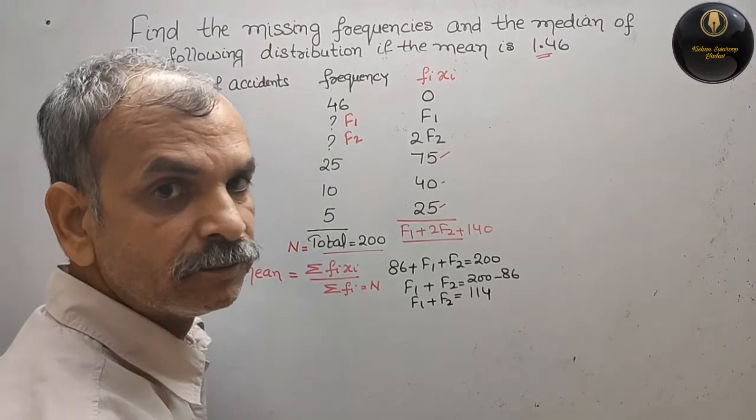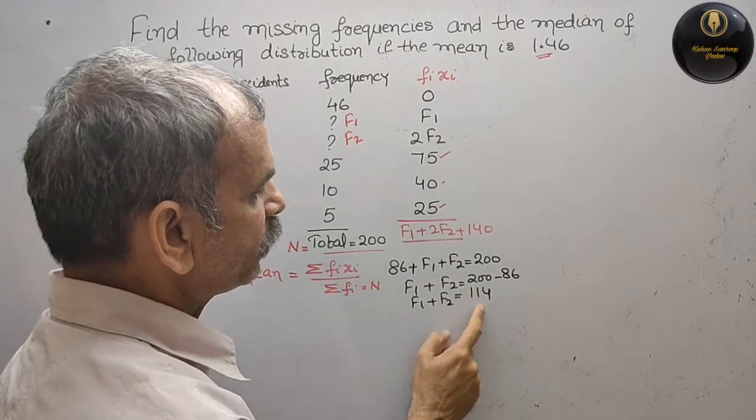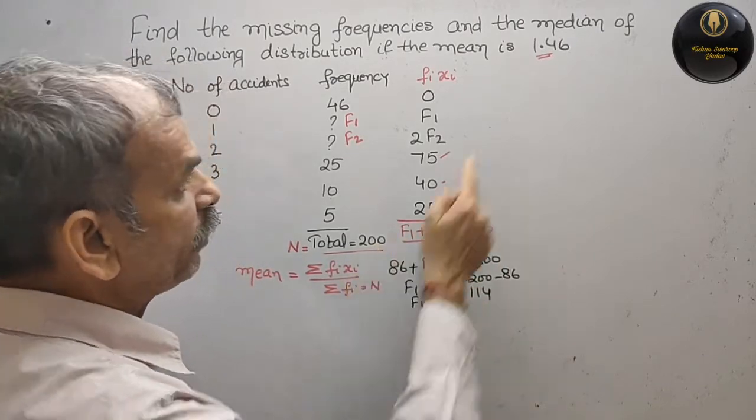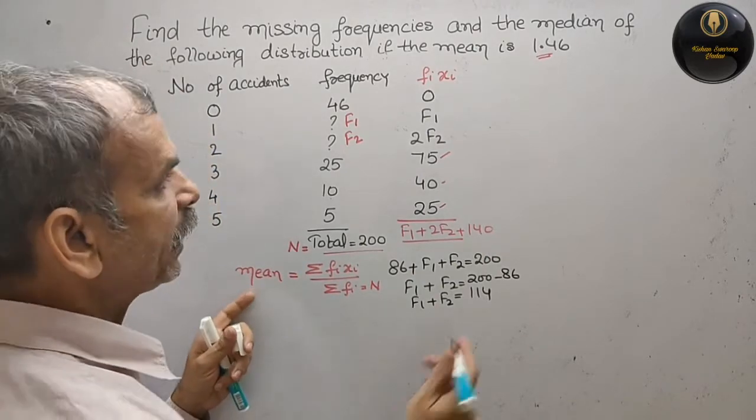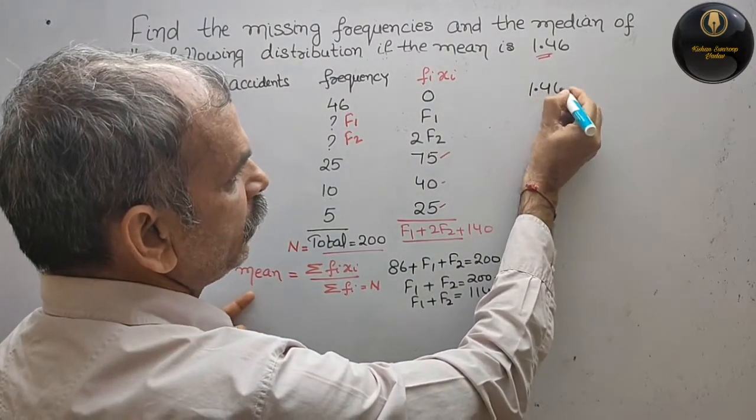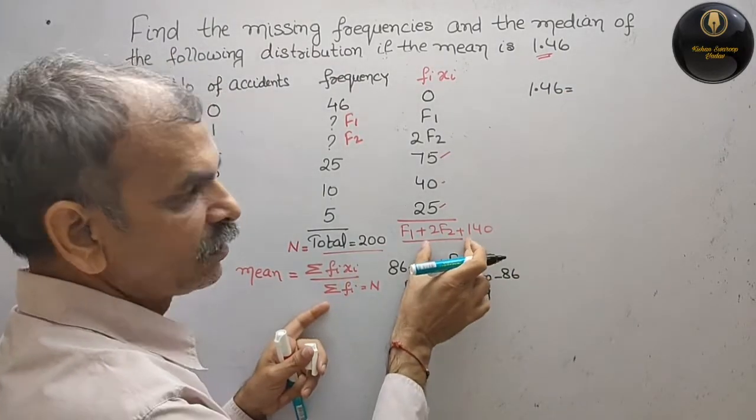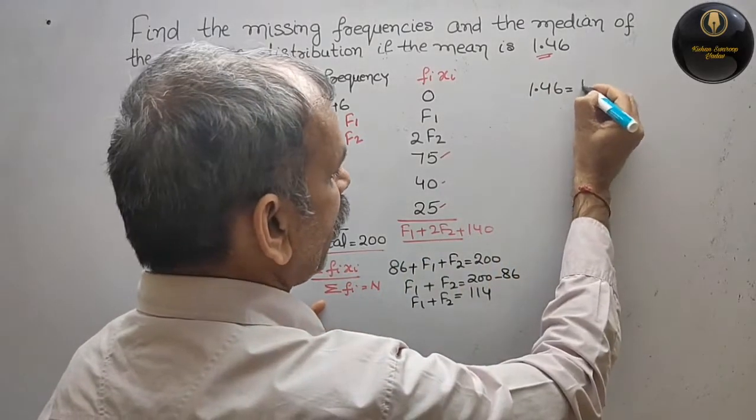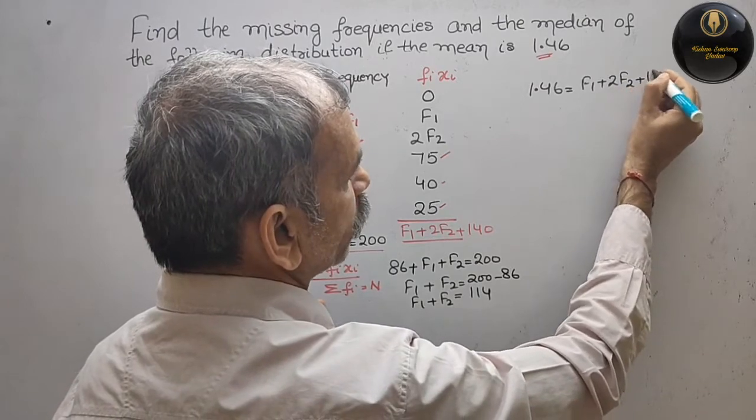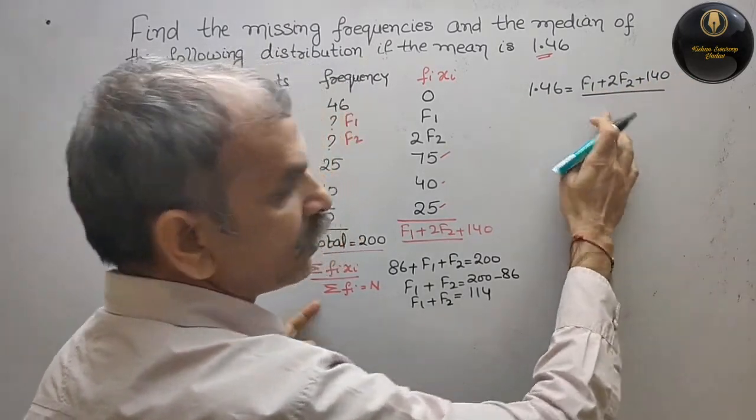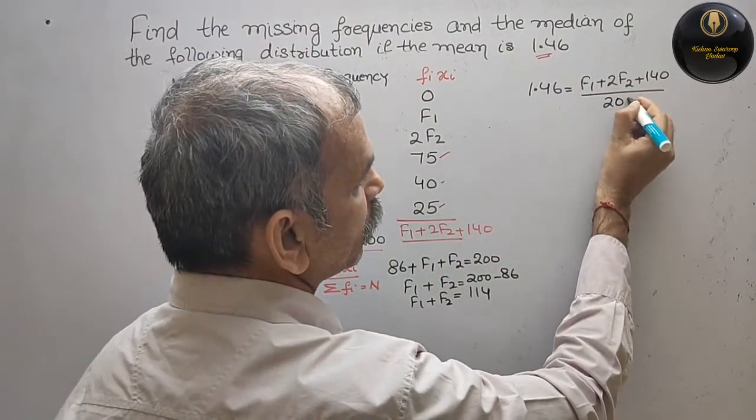Now we will substitute this value here. What we will get? We will get mean is 1.46, that is equal to summation of f_i x_i is this, that is your f1 plus 2f2 plus 140 by n, 200.